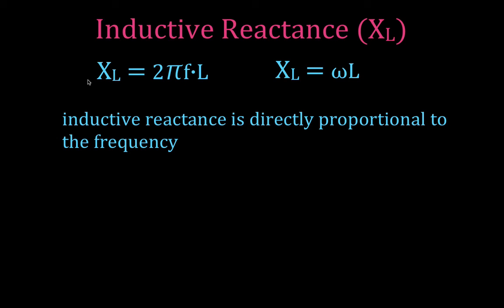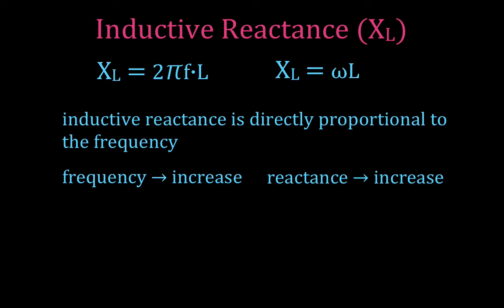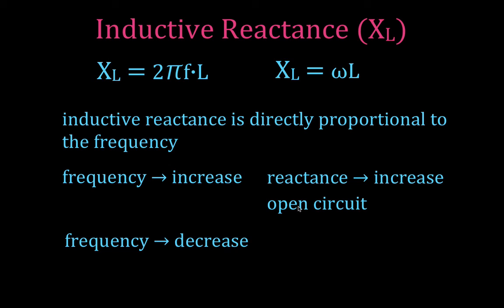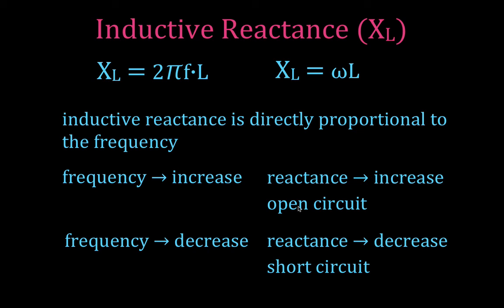Inductive reactance is the opposite of capacitive reactance in its frequency behavior. As frequency increases, reactance increases — like resistance increasing — and at a high enough frequency the inductor begins to act like an open circuit and no current can flow. If we decrease the frequency, the reactance decreases, and the coil begins to act like a short circuit, simply like a wire.